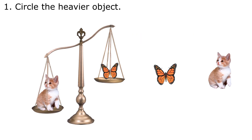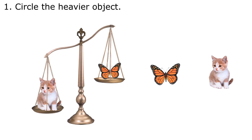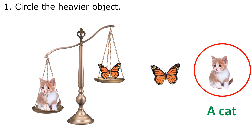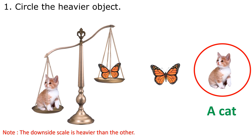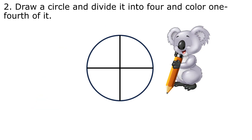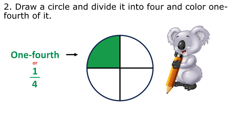Question 1: Circle the heavier object — a cat or a butterfly. A cat. Note: the downside of the scale is heavier than the other. Question 2: Draw a circle and divide it into 4 and color one-fourth of it. One-fourth.